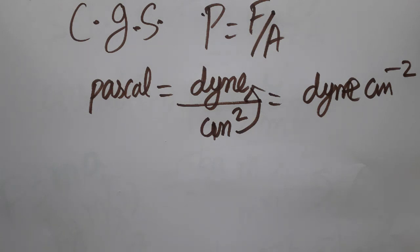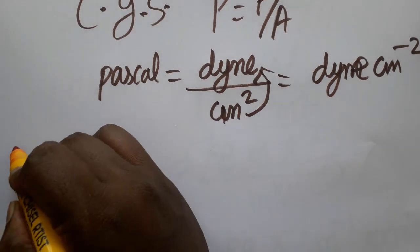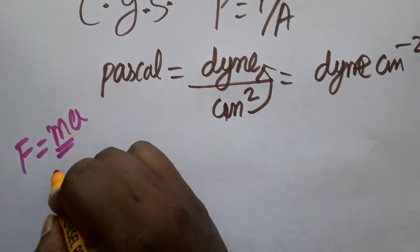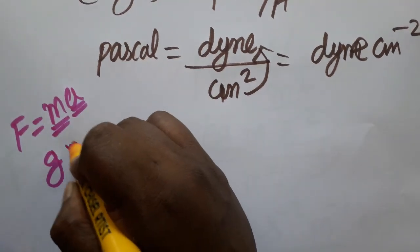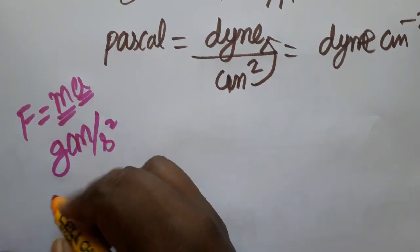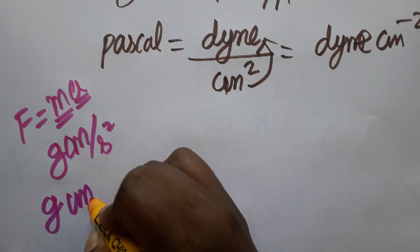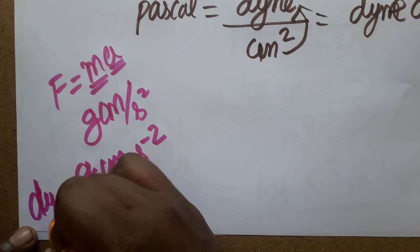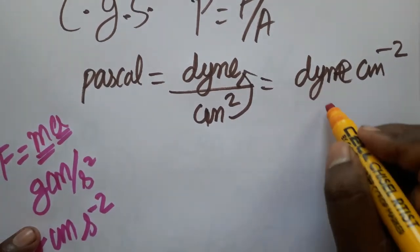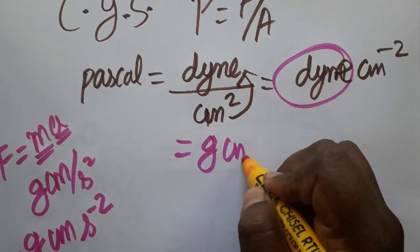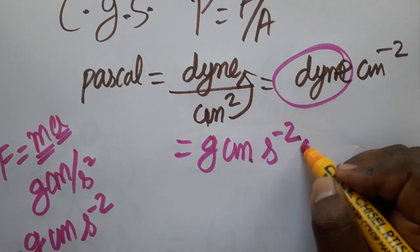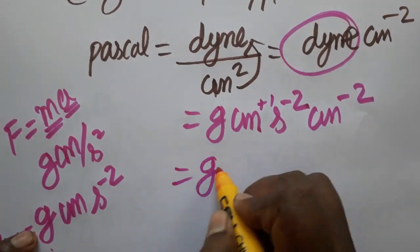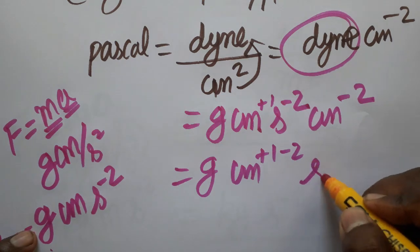Dyne is the CGS unit of force. Using F = ma: mass in grams, acceleration in cm/s², so 1 dyne = g·cm·s⁻². Substituting: dyne·cm⁻² becomes g·cm·s⁻² × cm⁻², giving g·cm⁻¹·s⁻². So the CGS unit of pressure is g·cm⁻¹·s⁻².